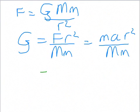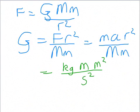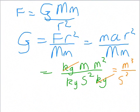Now, let's try putting in units. So we've got kilogram, metres, seconds squared, metres squared, and a kilogram, and a kilogram. So that gives us metres cubed over second squared kilogram.